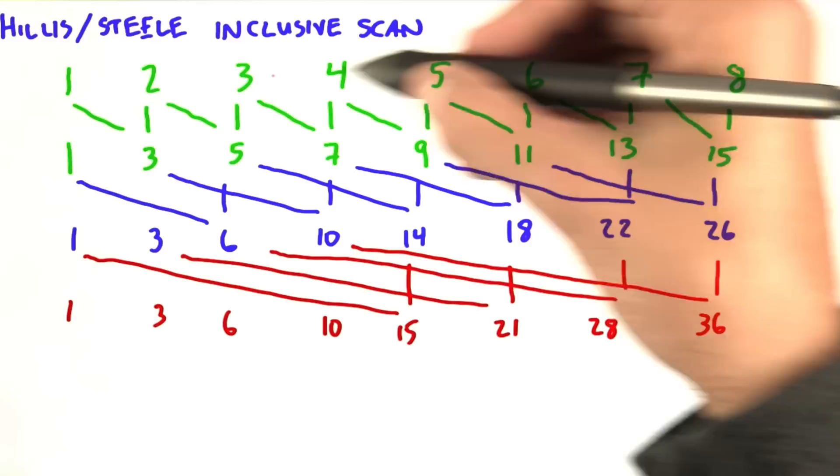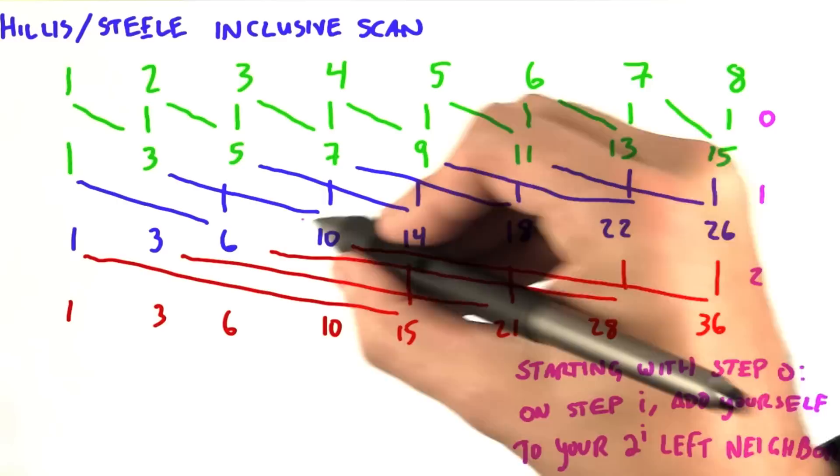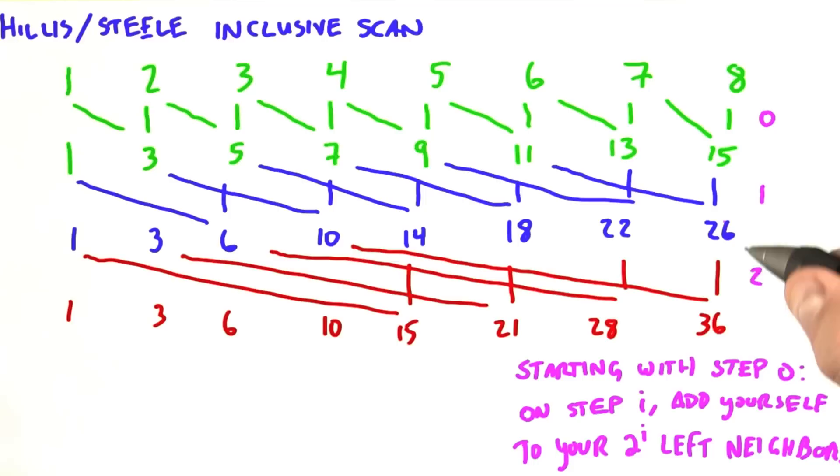So what's the algorithm that we used here? Starting with step 0, here's the steps here. On step i, your job at each location is to add yourself to your neighbor to the left, 2 to the i hops away. So here 1 hop away, here 2 hops away, and here 4 hops away. And if you don't have a neighbor that far to the left, you just copy yourself from the previous iteration.